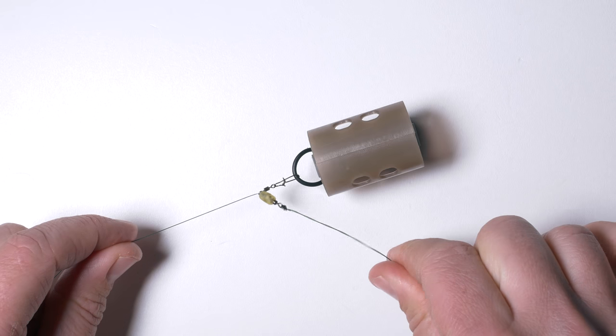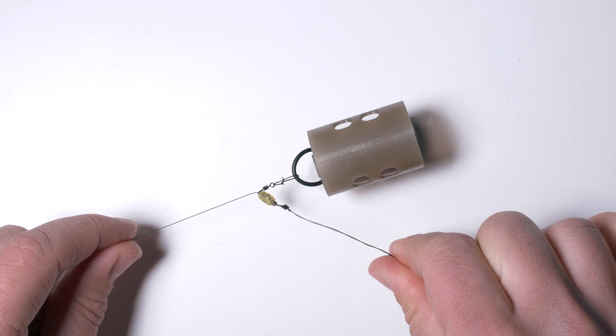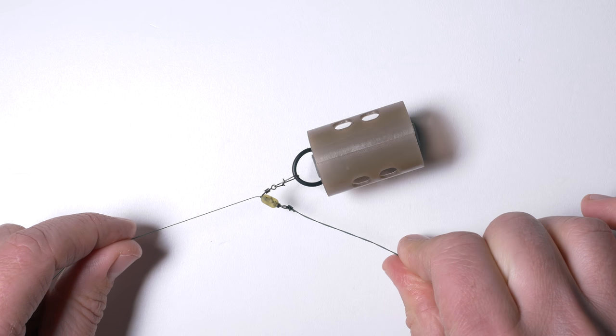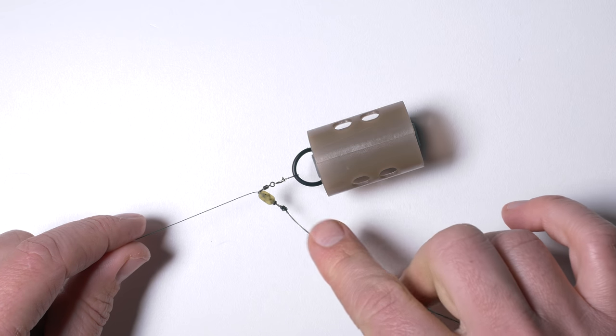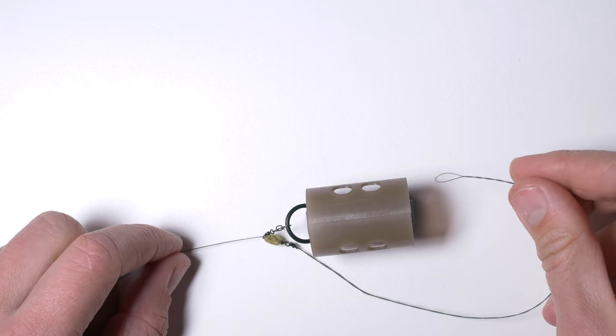As a result, thinner hook links will not get twisted and ruined. Once in the water, the swivel will spin even better because the water will lubricate it. That's it for today.